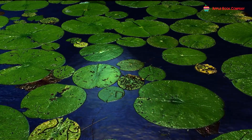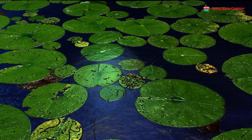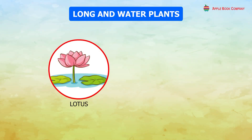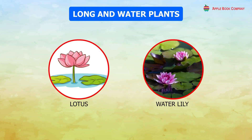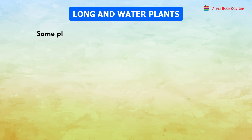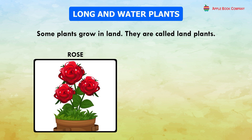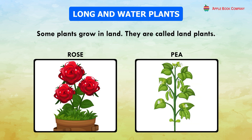Some plants grow in water. They are called water plants, such as lotus and water lily. Some plants grow on land. They are called land plants, for example, rose and pea.